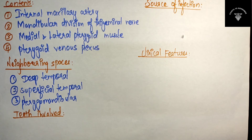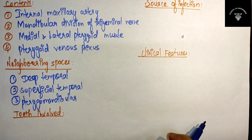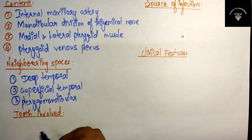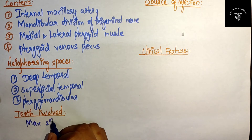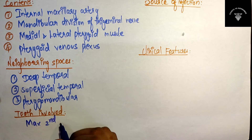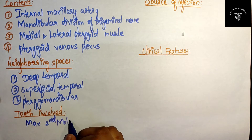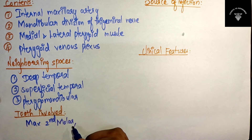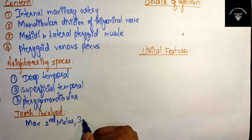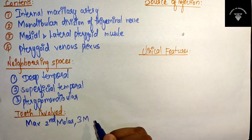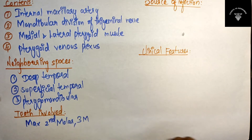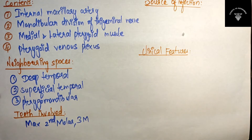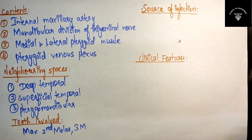The teeth involved in this infection are the maxillary second molar and the maxillary third molar — the buccal roots may be involved.